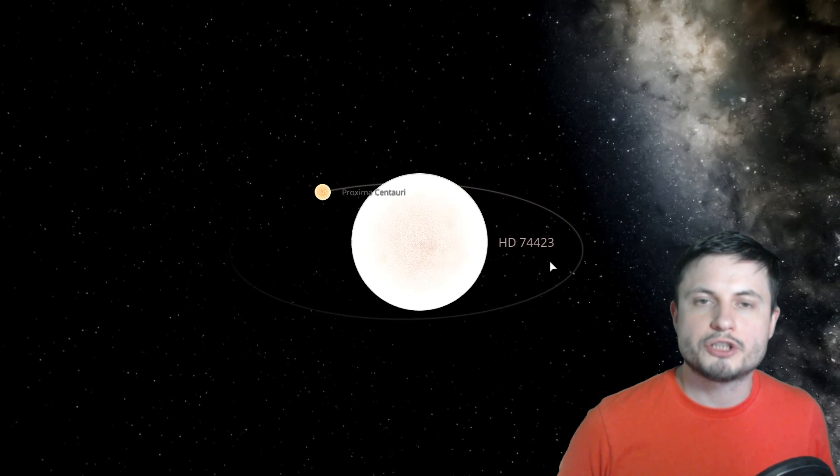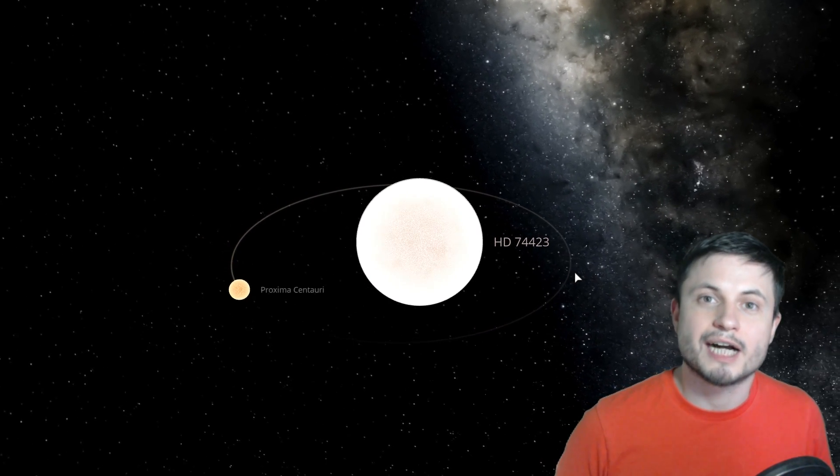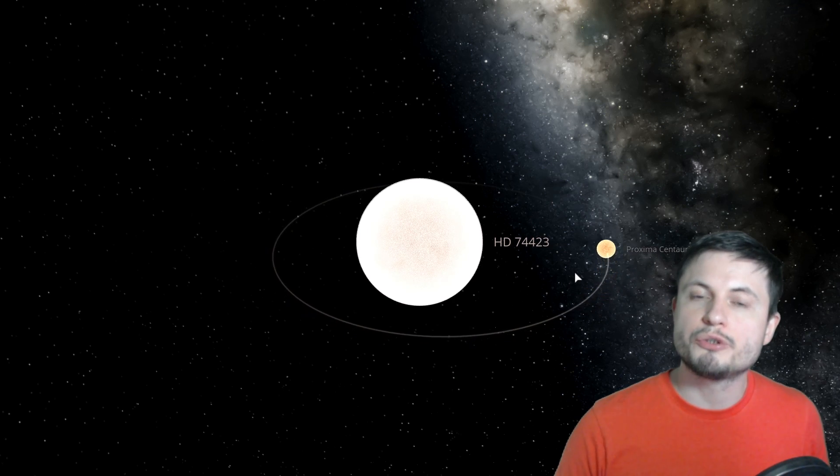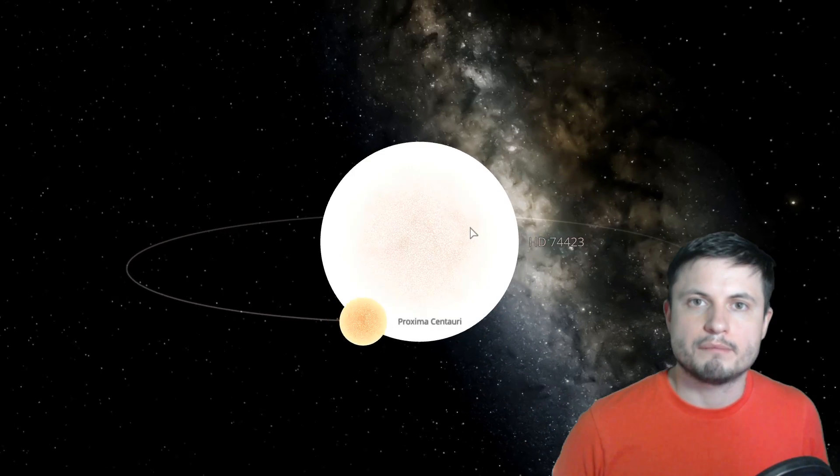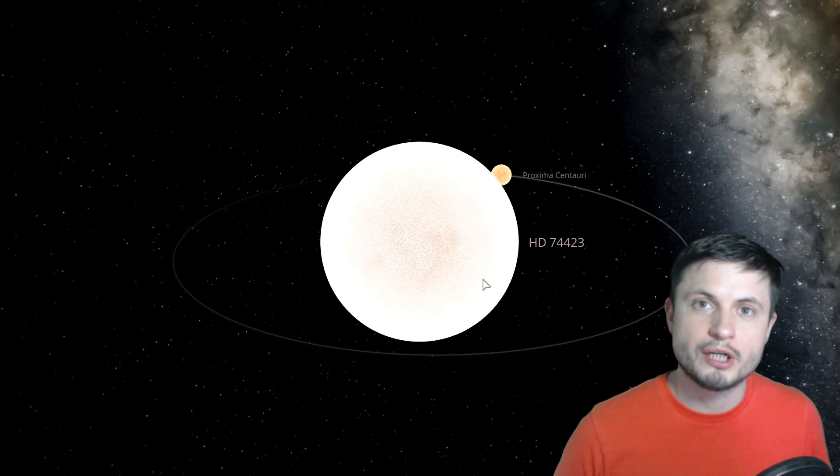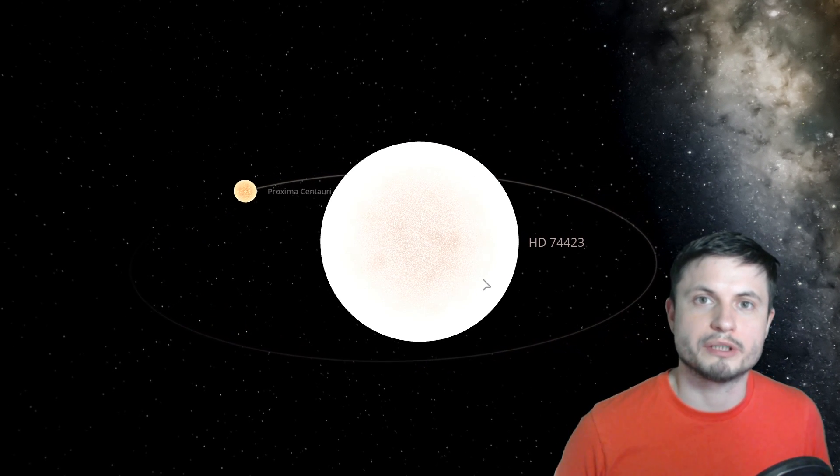At the same time we're obviously not entirely sure how the system formed, how the pulsations originated and most importantly what's going to become of the system later on. Basically are these stars going to collide with one another? Is one star going to escape somewhere else? Or is this a more or less permanent system?